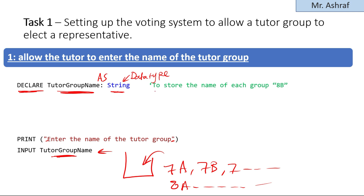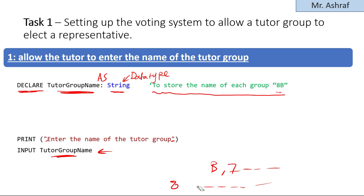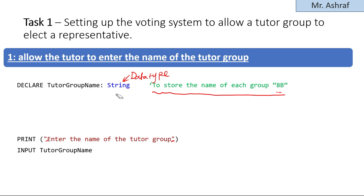I've written the purpose of this variable in green as a comment: 'to store the name of each group, for example 8B.' This is one of the exam questions that might appear — what variables did you use, what is the purpose of each, and what is the data type? Here: variable name is TutorGroupName, data type is STRING, purpose is to store the name of the tutor group.